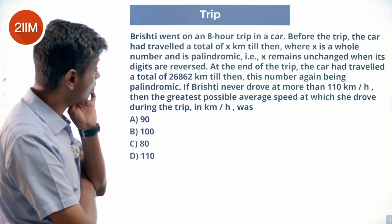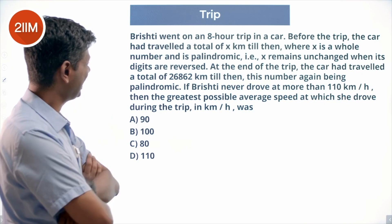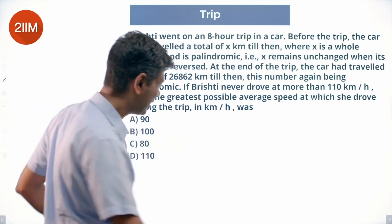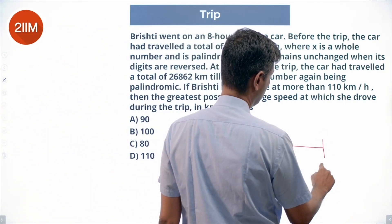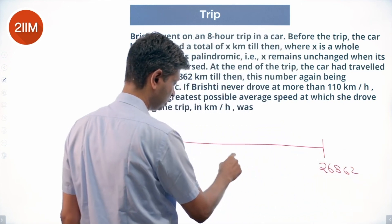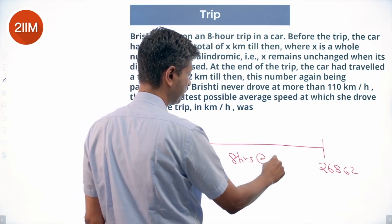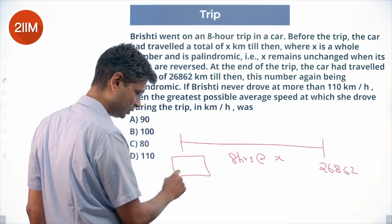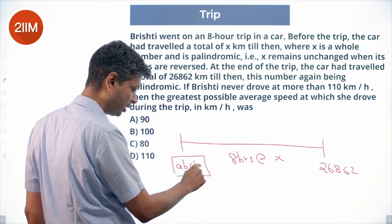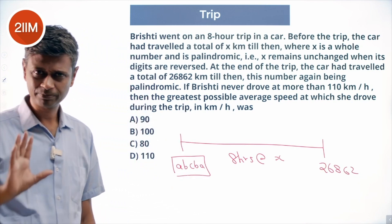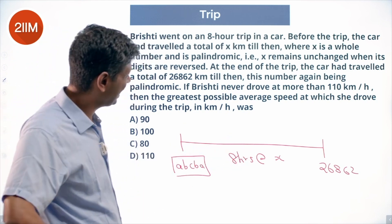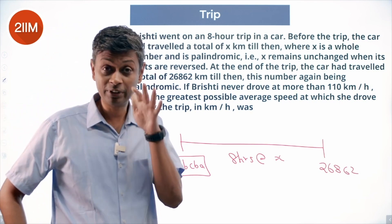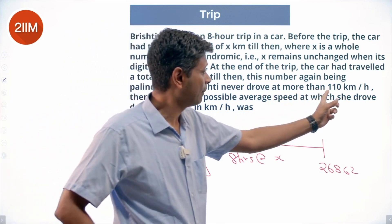If Brishti never drove at more than 110 kilometers per hour, what is the greatest possible average speed at which she drove during the trip in kilometers per hour? The end reading is 26862; she drove for 8 hours at some average speed. The starting reading X must be a palindrome of the form ABCBA. This is really a number theory question, not just a speed-time-distance question.